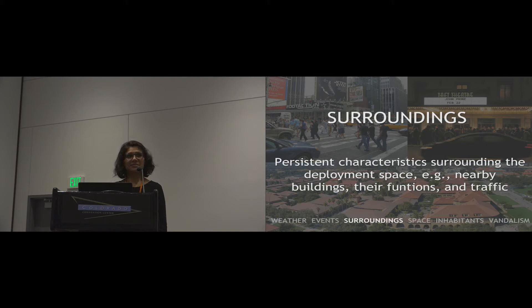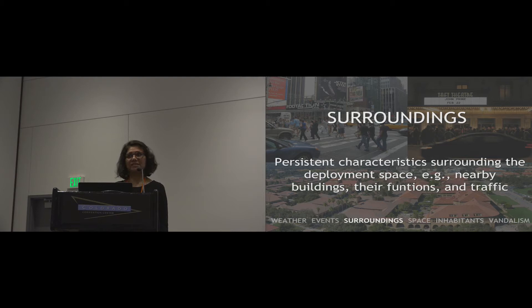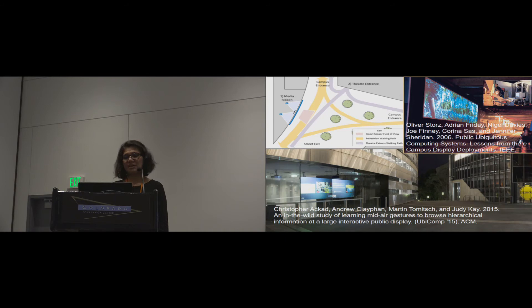The third category is surroundings, which refers to areas and their persistent characteristics surrounding the deployment space, including nearby buildings, their functions, and traffic. Surroundings may affect people flow and the amount of people in the area, demographics and their prominence during specific times of day, and lack of resources — for instance, things commonly taken for granted such as internet connection and electricity may not always be available.